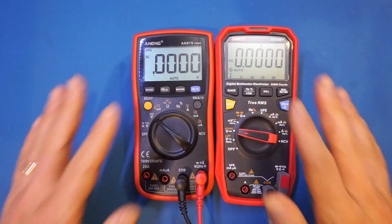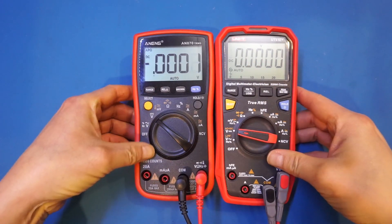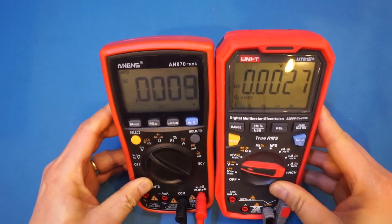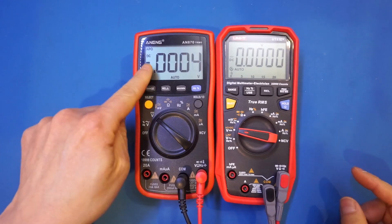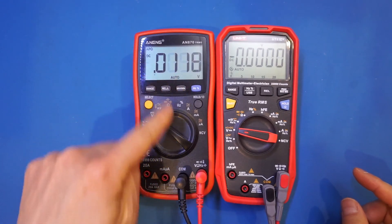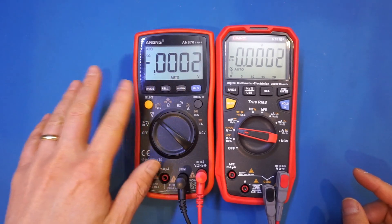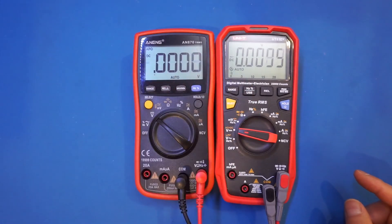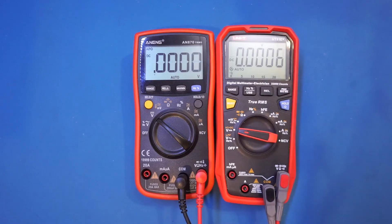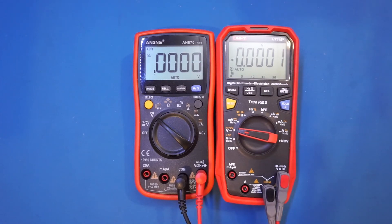In terms of the clarity of the displays, both are very good, and especially the Uni-T one. It doesn't really do its justice on camera. The Anung one has a little bit of ghosting from this angle, and the display, although very clear, is not as crisp as the one on the Uni-T UT61E.